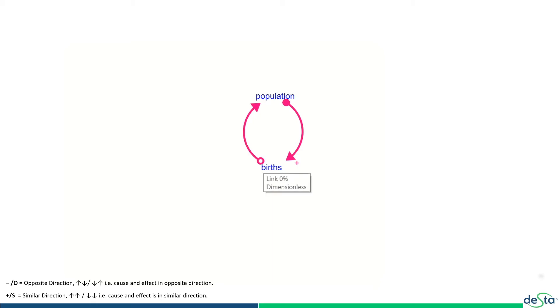This means if population goes up, births go up. If births also go up, population also goes up. Now you can either use a plus sign here...